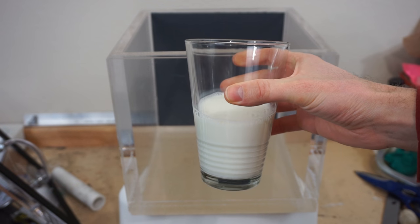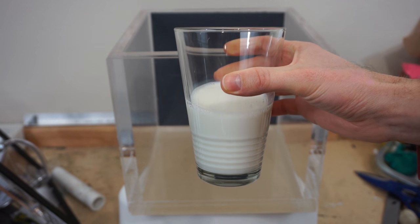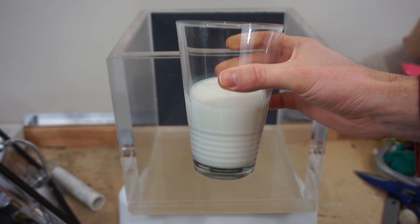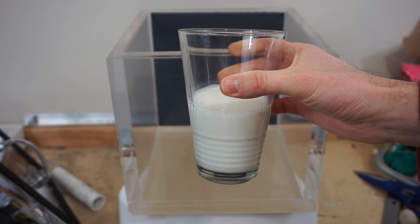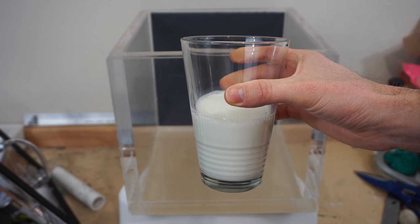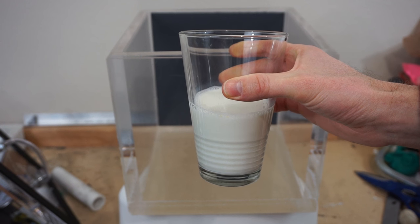So when I put the milk in there, as soon as the pressure gets down to what's called the vapor pressure, the water in the milk is going to start to boil and evaporate, and it's going to keep cooling the milk down.